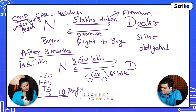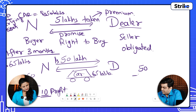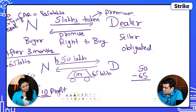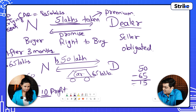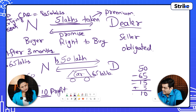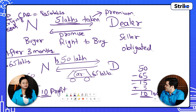Similarly for the dealer: he received 50 lakh rupees but gave away goods worth 65 lakh rupees, so his loss is 15 lakh rupees. But he had taken 5 lakh rupees as premium earlier, so his net loss is 10 lakh rupees. Your profit is exactly equal to his loss.